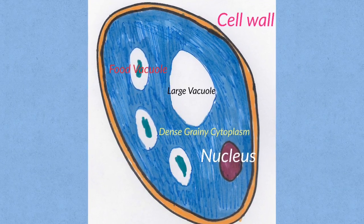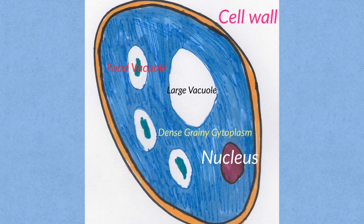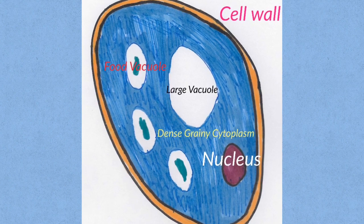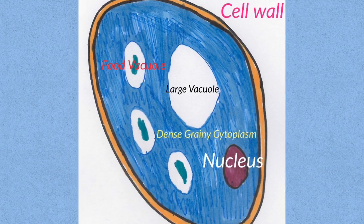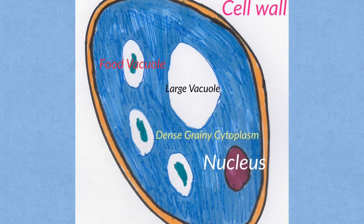So if you're asked to draw a yeast diagram or to label one, these are the labels you must have: cell wall made of chitin, food vacuole, nucleus, dense grainy cytoplasm and a large vacuole.